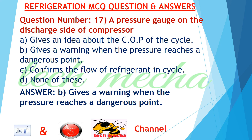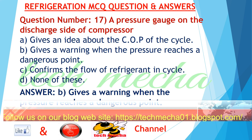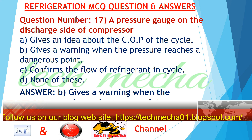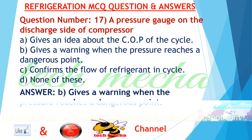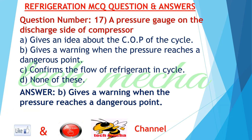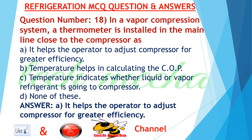Question number 17: A pressure gauge on the discharge side of compressor A. gives an idea about the COP of the cycle, B. gives a warning when the pressure reaches a dangerous point, C. confirms the flow of refrigerant in cycle, D. none of these. Answer: B. gives a warning when the pressure reaches a dangerous point.